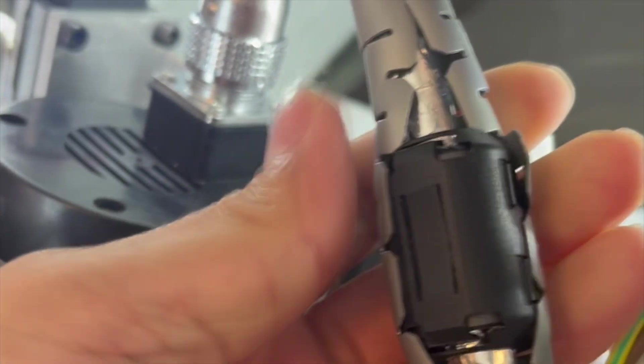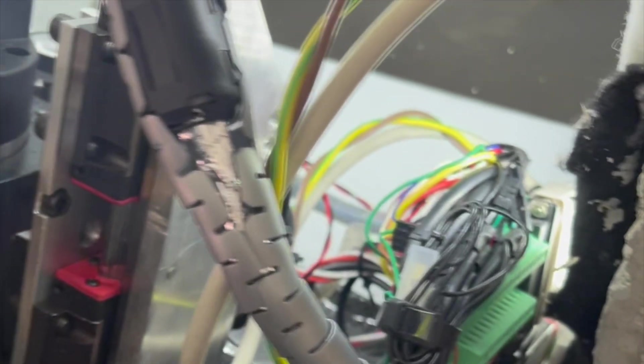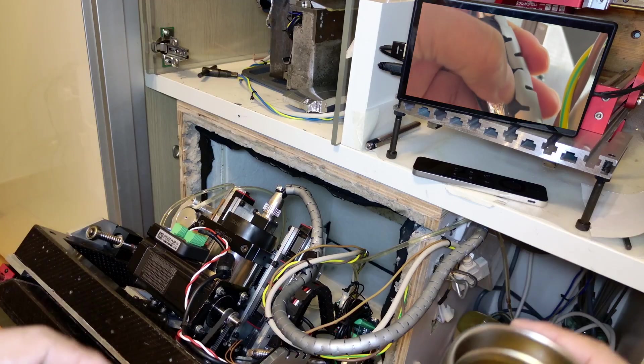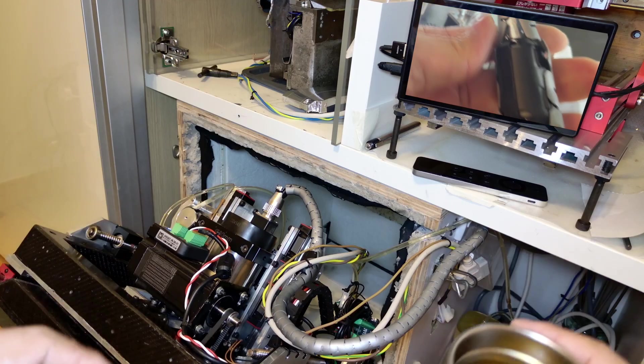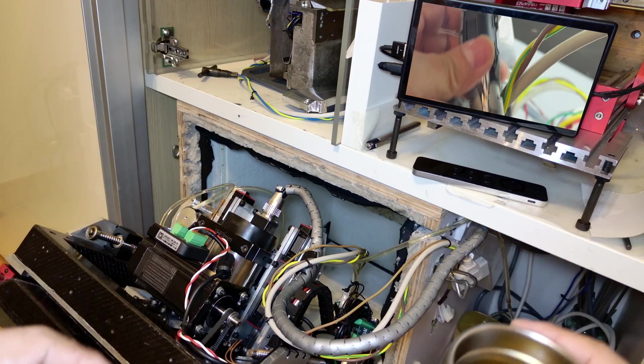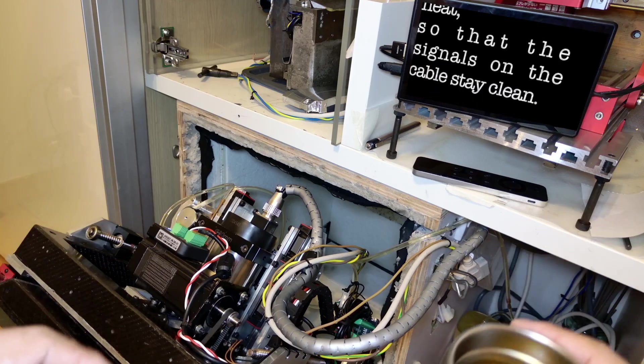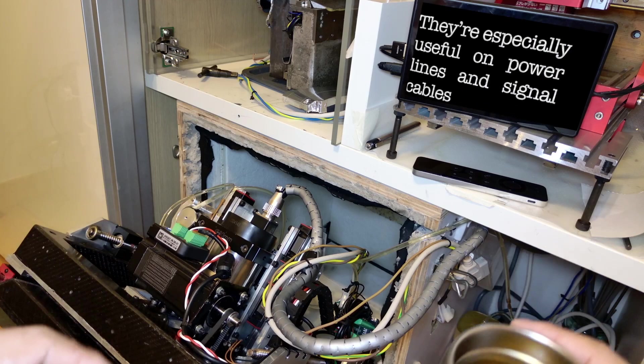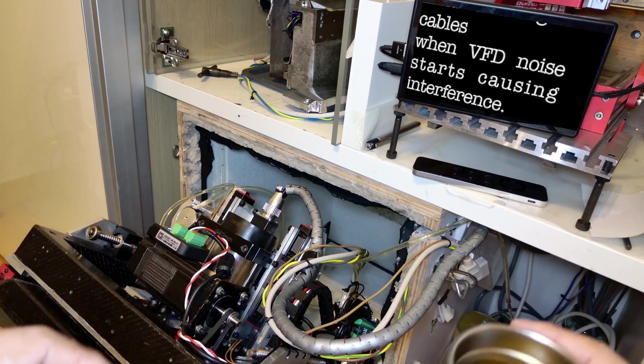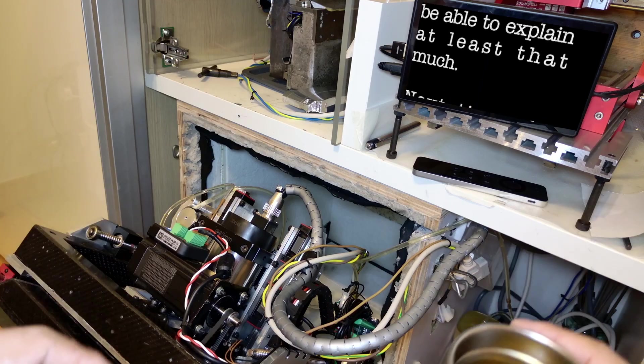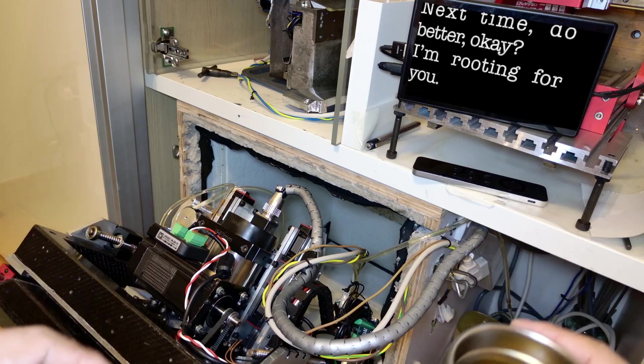And of course I also added ferrite cores everywhere I could. It's kind of strange, isn't it? Just clipping on these little things and somehow the noise problems get so much better. But honestly they really do help. Since Freak can't explain what ferrite cores actually do, I'll give a quick explanation. Ferrite cores are like filters for cables. They block high-frequency noise by absorbing it as heat, so that the signals on the cables stay clean. They're especially useful on power lines and signal cables when VFD noise starts causing interference. Freak, you should really be able to explain at least that much. Next time do better, okay? I'm rooting for you.